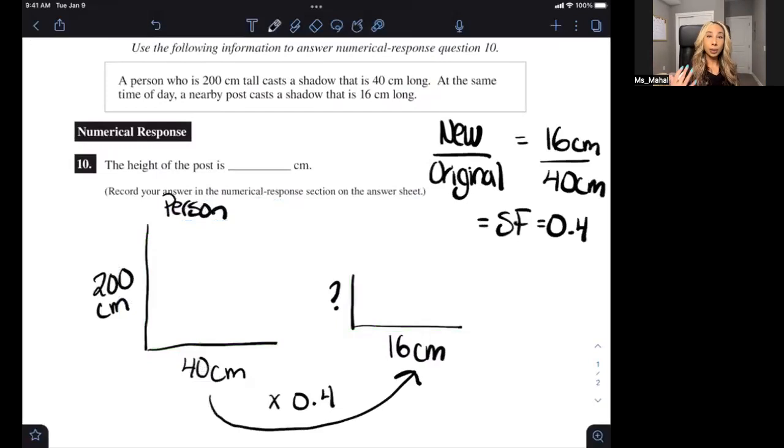That means that in order to find the height of the pole, I also have to multiply the 200 by 0.4 to be consistent. So when I do that, I'm going to get 80 centimeters. So this means the height of the post is 80 centimeters. And that's your answer for that one.